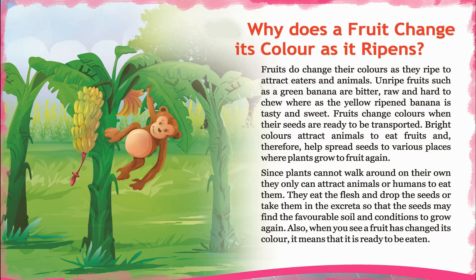Animals are attracted to eat fruits, which helps spread seeds to various places where plants can grow again. Since plants cannot walk around on their own, they attract animals or humans to eat them. The animals eat the flesh and drop the seeds, or pass them through excreta, so the seeds may find favorable soil and conditions to grow.